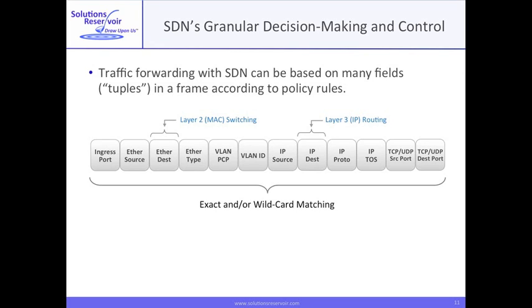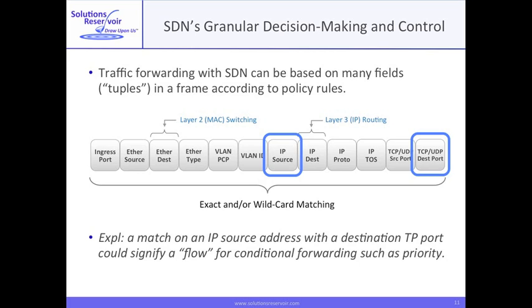Defining granular flows can be done easily on a network-wide basis in an SDN. You convey your high-level needs to the controller, and it executes a network-wide implementation. For example, you name a specific condition — an IP source address and destination TCP port — and then define some action, such as priority handling, for traffic matching this condition. These rules and actions would be implemented via flow tables across many network elements.